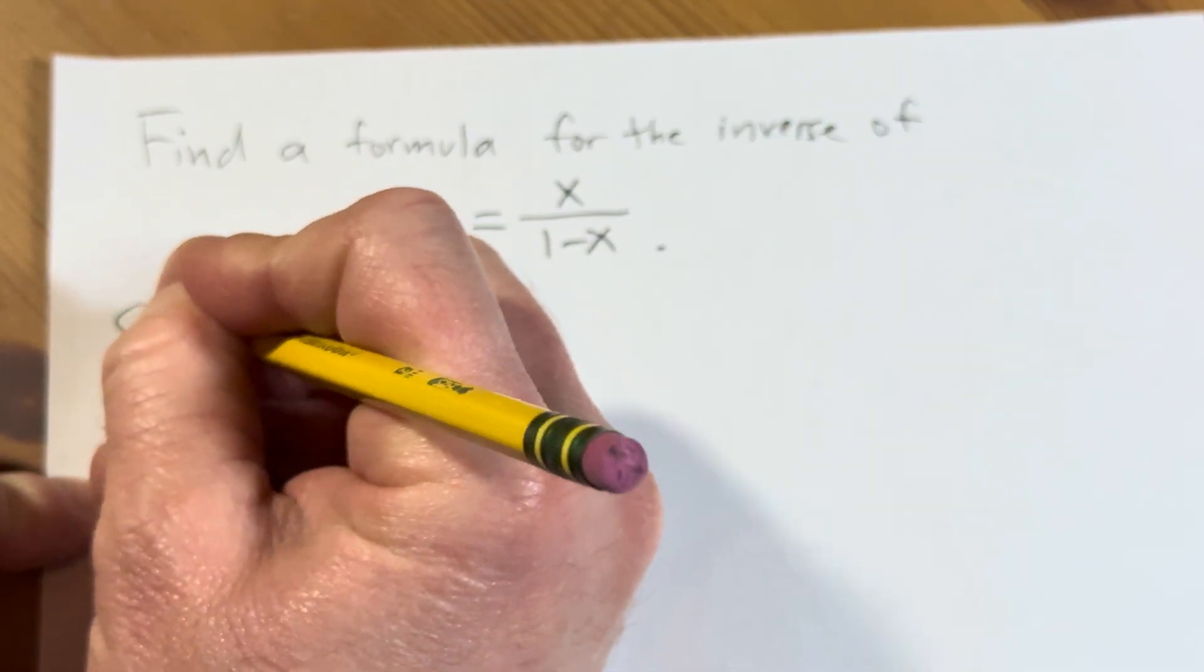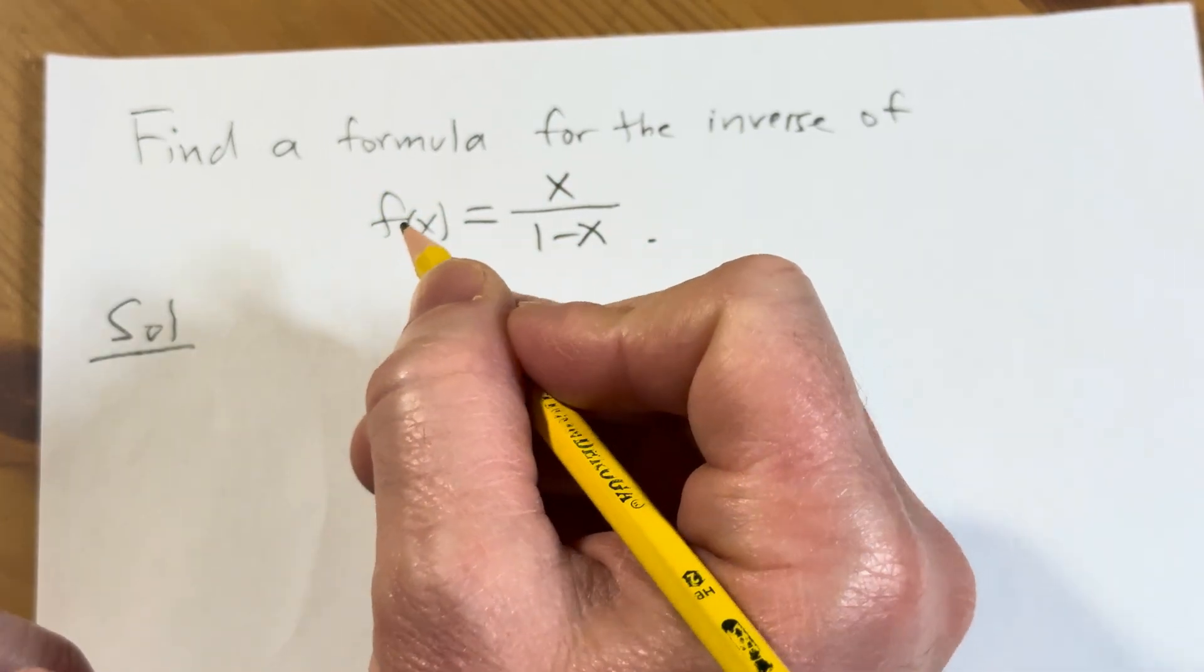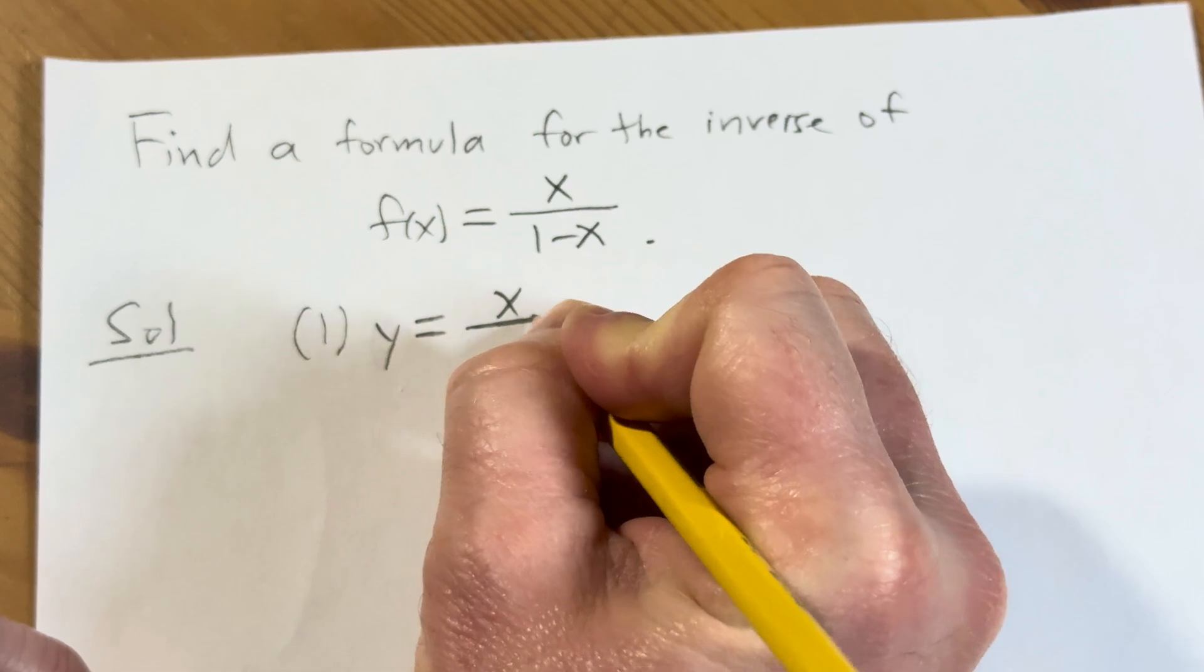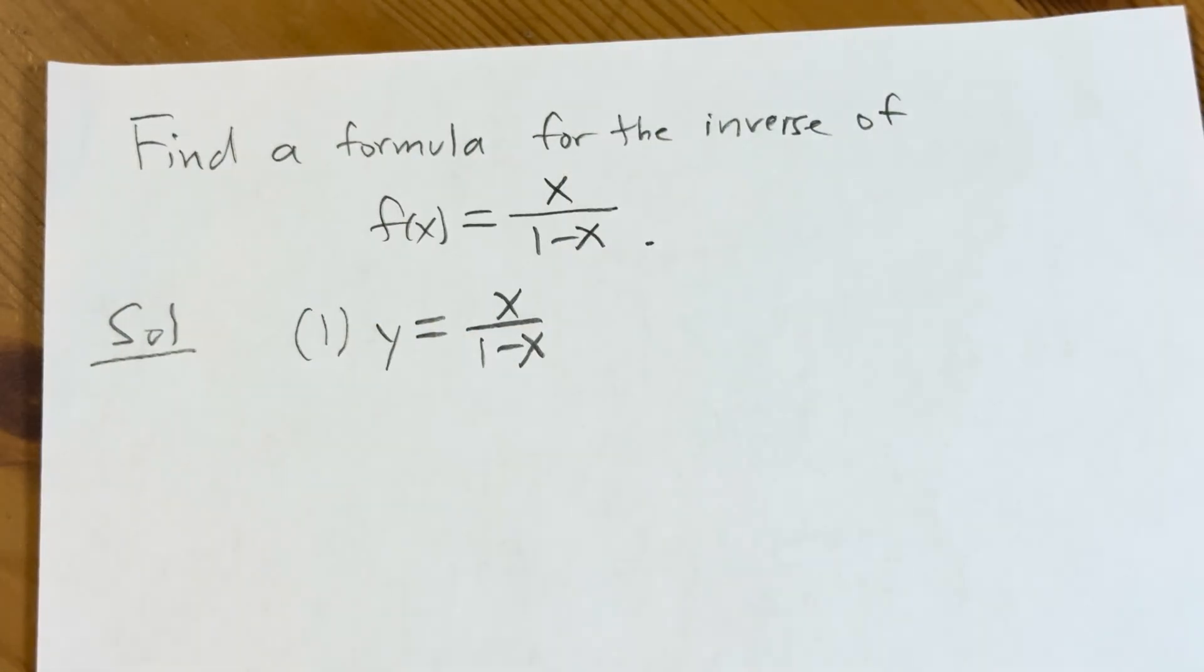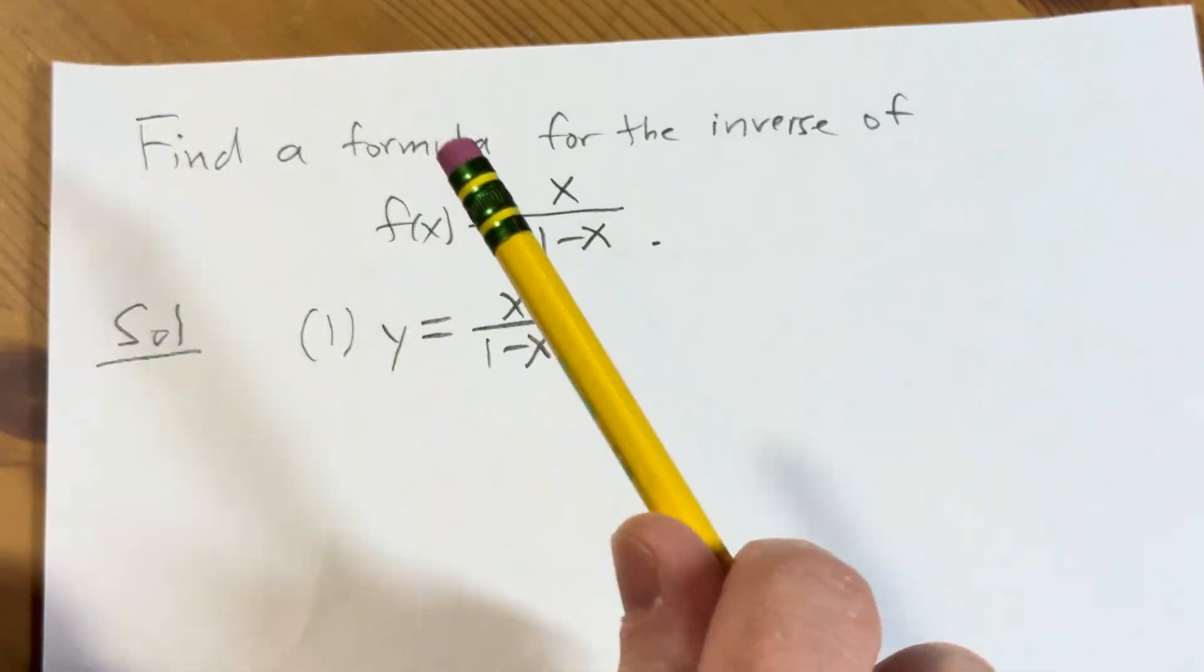So the solution. I'm going to go through this fairly quickly. Step one is to replace f(x) with y. So y becomes x/(1-x). That is step one in the problem. Always replace f(x) with y, everything else stays the same.